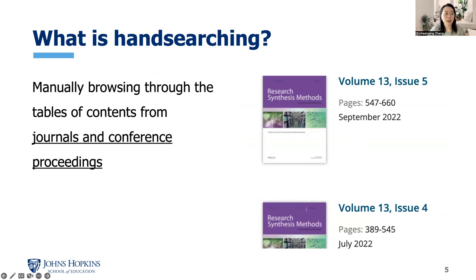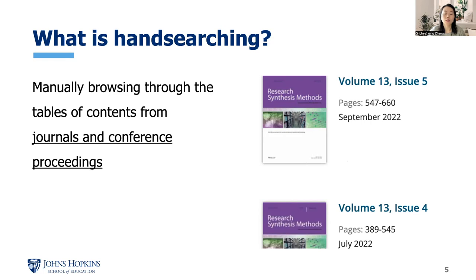Hand searching means manually browsing through the tables of contents from journals and conference proceedings. For example, this journal called Research Synthesis Methods. If I want to conduct hand searching on this journal, I will browse through each volume, each issue, and look at the table of contents to identify relevant articles related to my research.